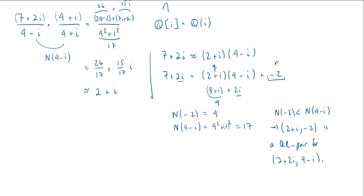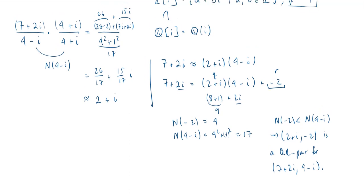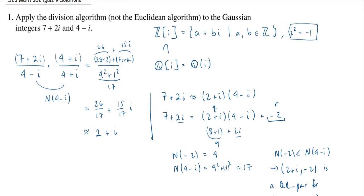Notice we stop here because the problem told us to use the division algorithm and not the Euclidean algorithm. The Euclidean algorithm, of course, would require us to continue — changing our divisor into a new dividend and our remainder into a new divisor, then performing the division algorithm again. But we're not asked to do that here. Hope this is helpful. We will see you next time.